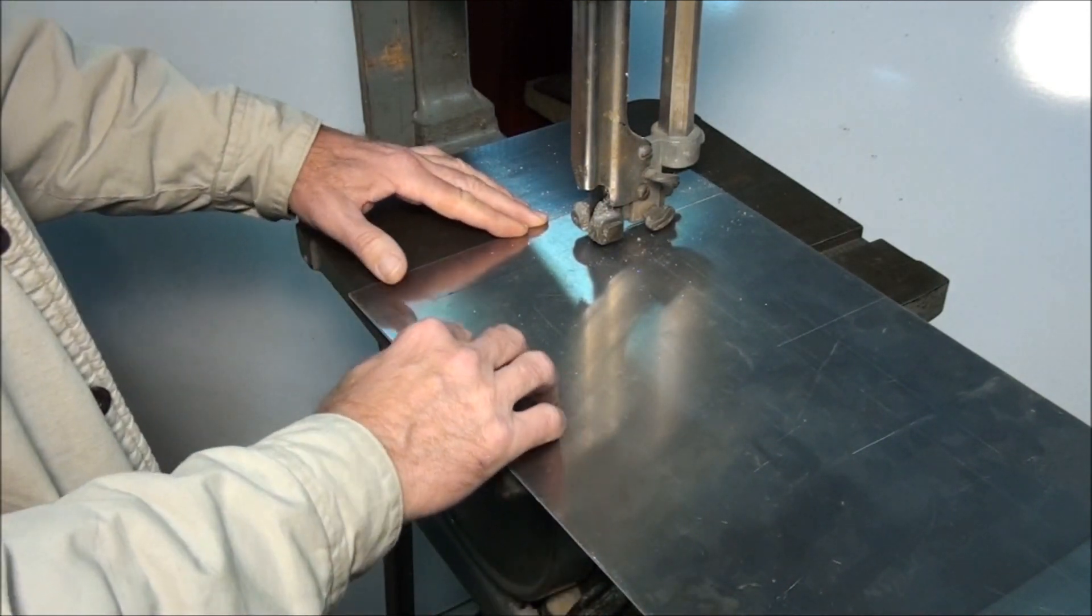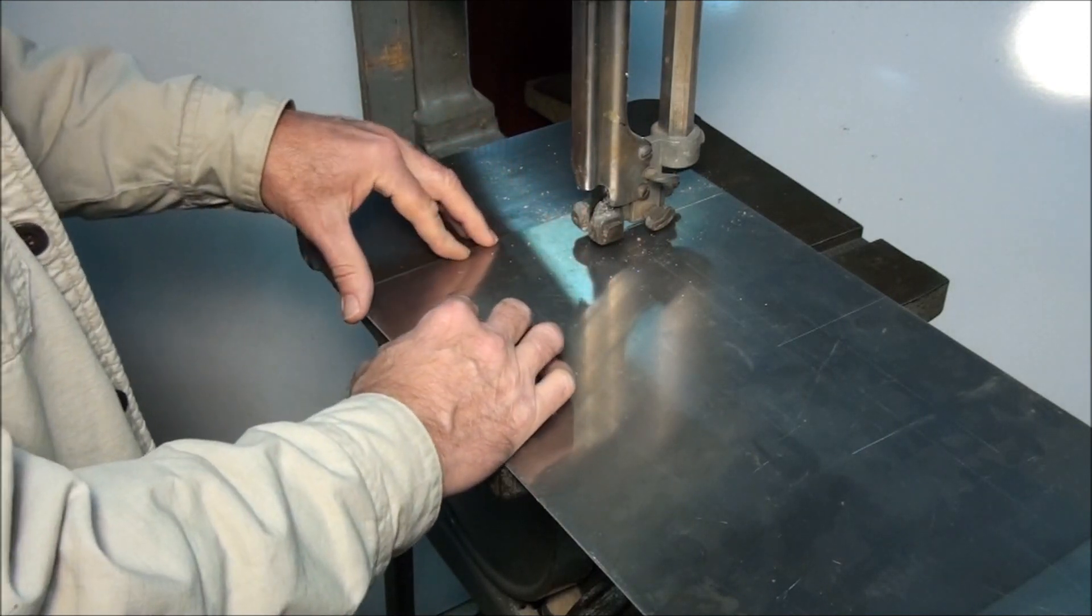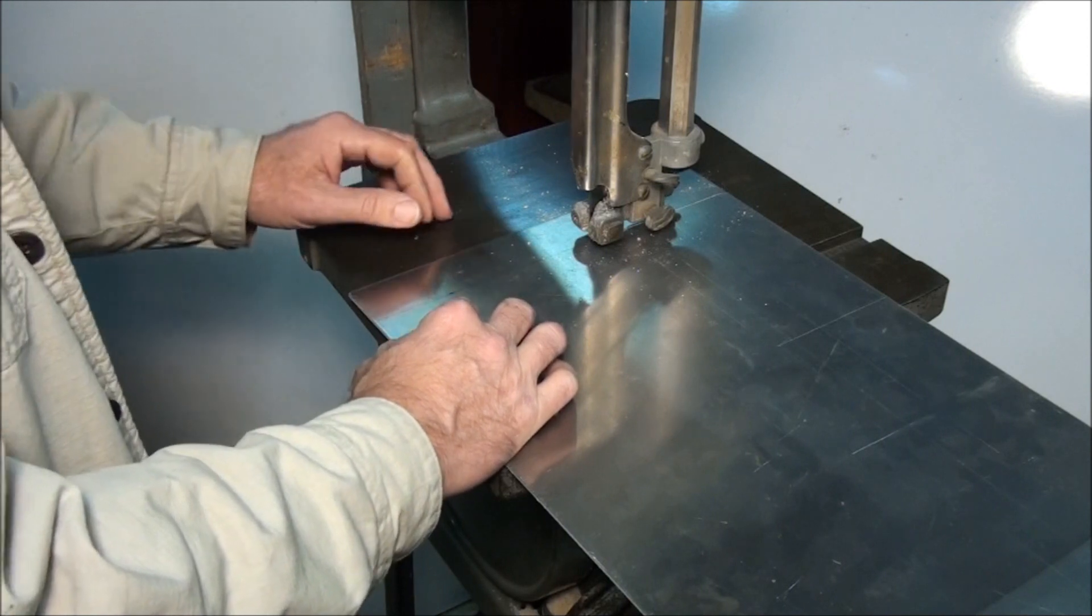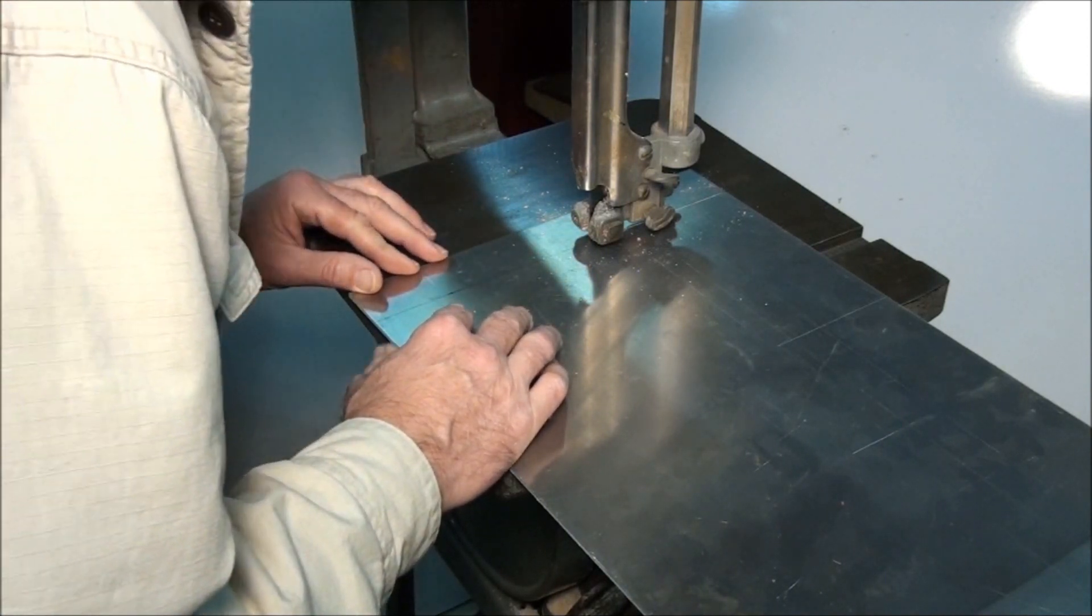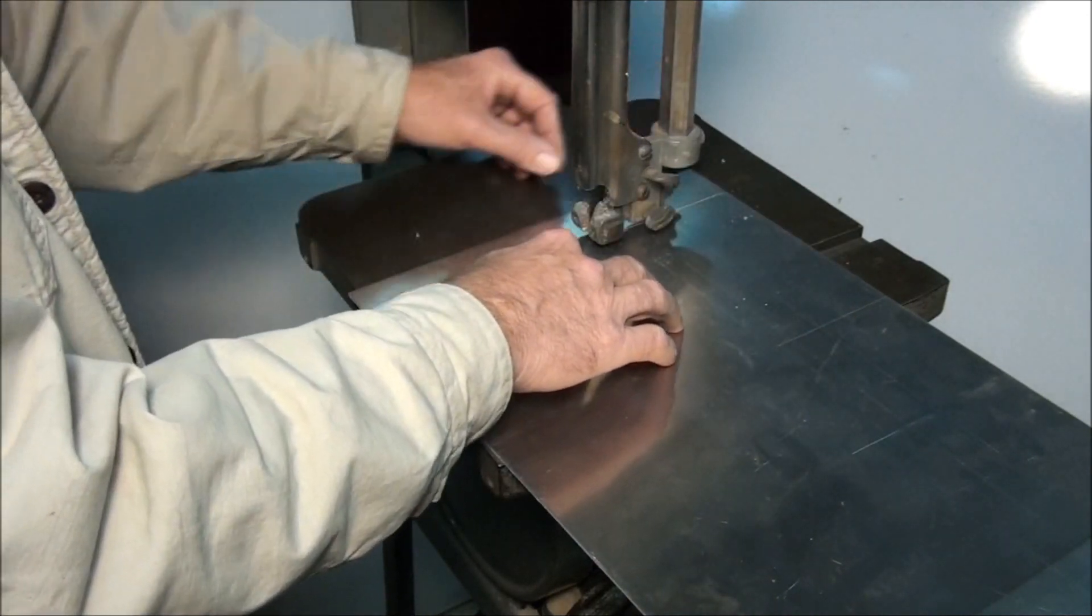Whenever you're sawing, you never want to get your thumb or your forefinger in line with the blade when you're pushing, because if you slip, you're going to put your thumb into the blade. That's a real common accident on a band saw. When you're pushing, keep your hands on each side of the blade, so if you slip, you won't go into the blade.